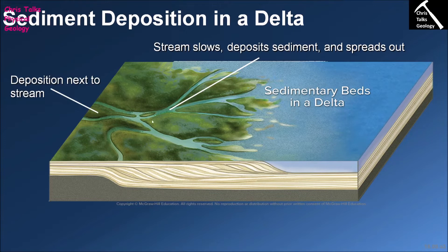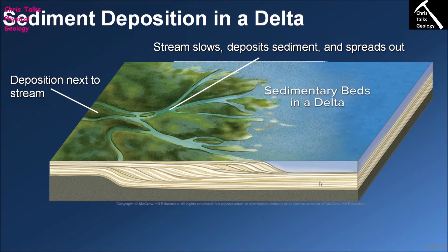Deposition begins where the river initially enters the body of water, and steadily over time sediment builds up leading to delta development. There is also significant sediment deposition right where the river hits the delta itself, because the delta is relatively flat and water is not moving along the distributory channels at any great speed. This means deceleration occurs even before the river water actually hits the lake or sea. As a result, sediment is actively deposited both on the delta and in front of the delta.